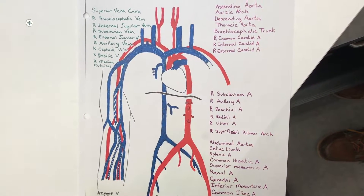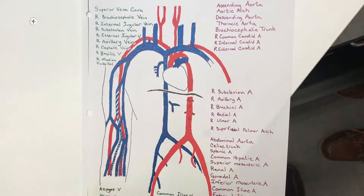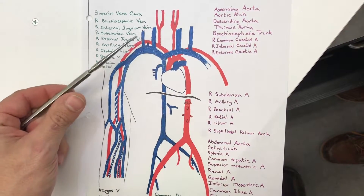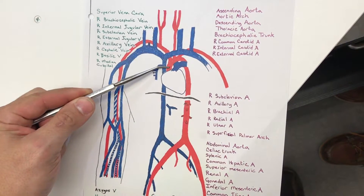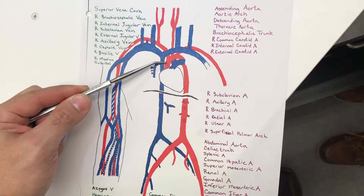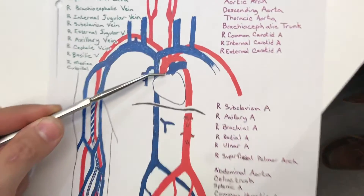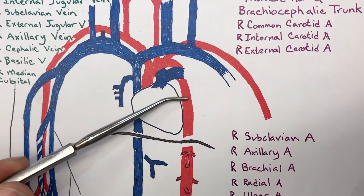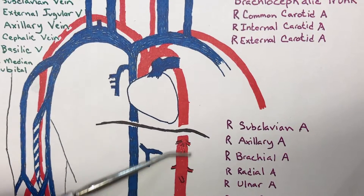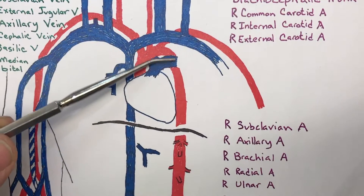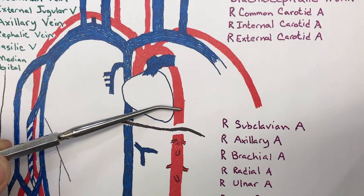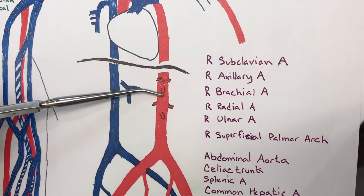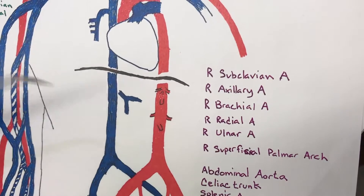These are the blood vessels for unit two. Right here, this is your ascending aorta, aortic arch, and the descending aorta. More specifically, this is the thoracic aorta, and this is your abdominal aorta.